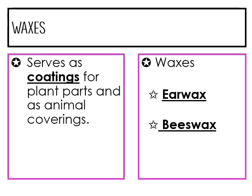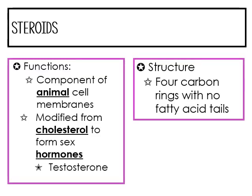For waxes, a wax serves as a coating for plant parts and animal coverings. Examples are earwax and beeswax. For steroids, their function is as a component of the animal cell membrane. They are modified from cholesterol and they form sex hormones like testosterone. The structure is a four-carbon ring with no fatty acid tails.